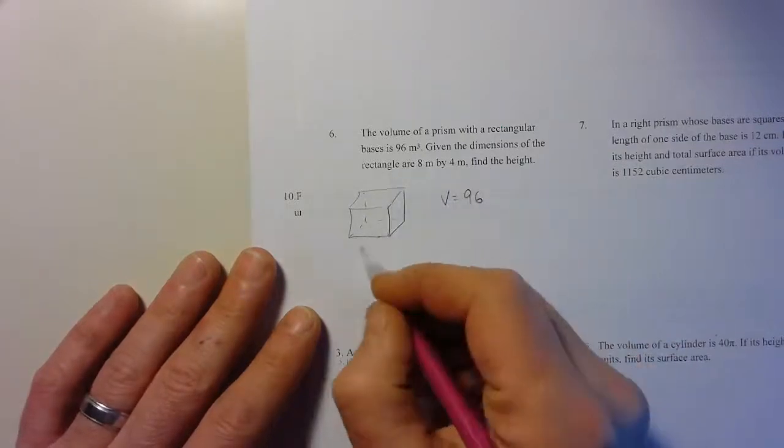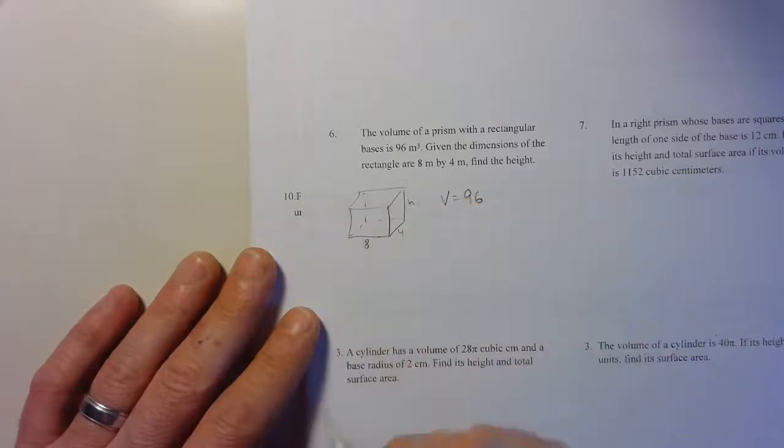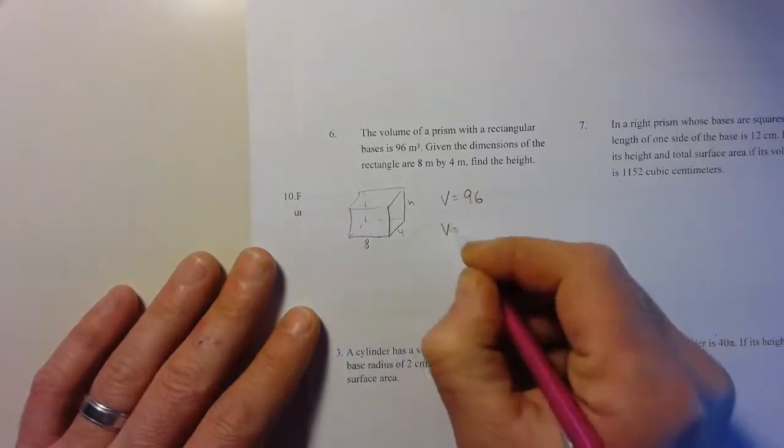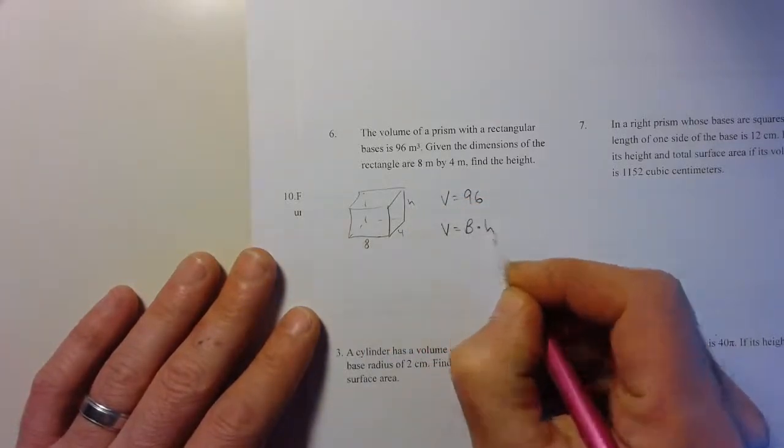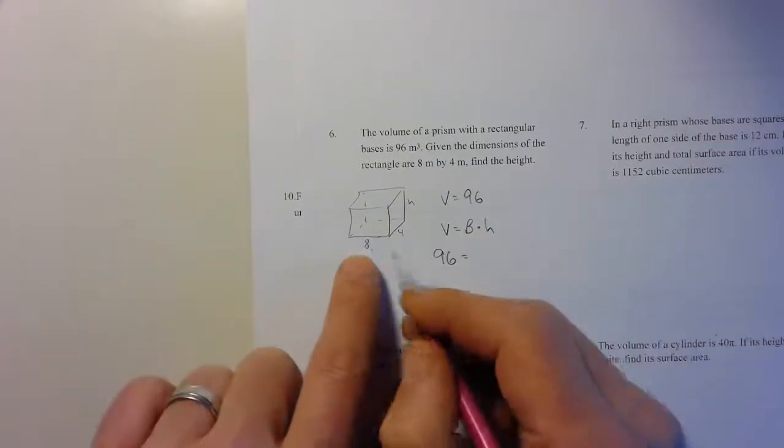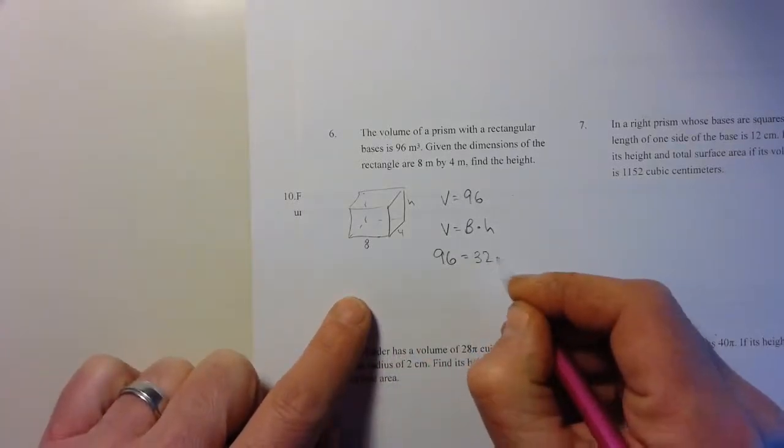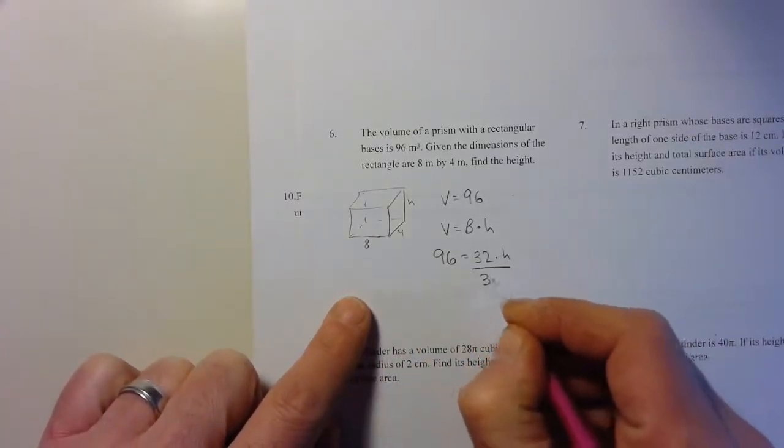Remember, volume is area of the base times height. The volume is 96. The area of the base - well, the base shape is a rectangle - that's a rectangle with an area of 32. So let's divide by 32.